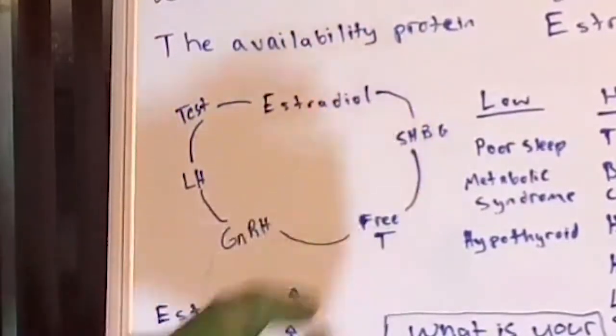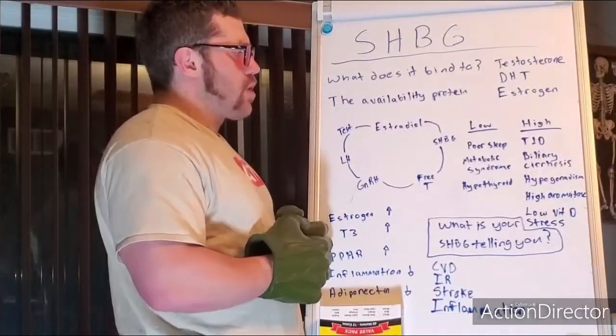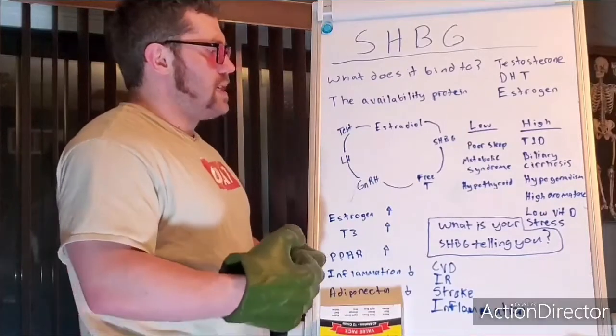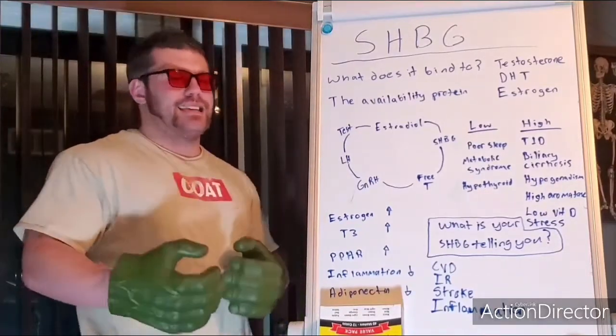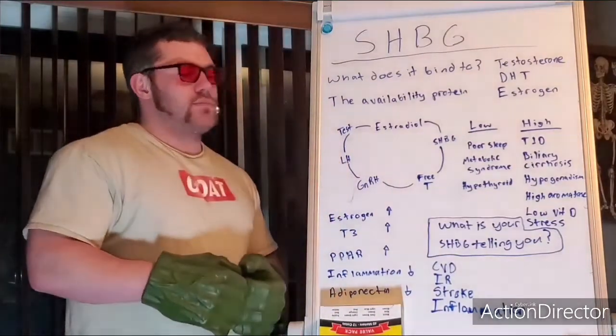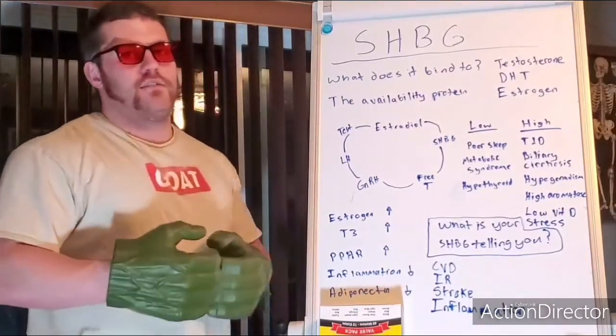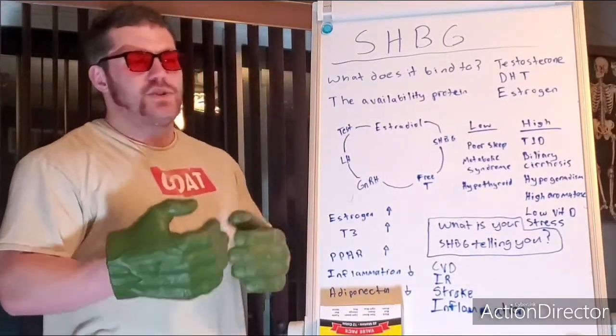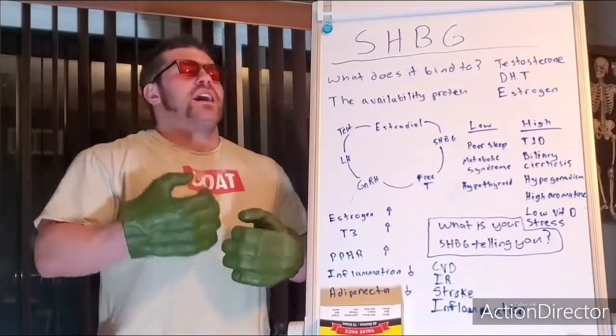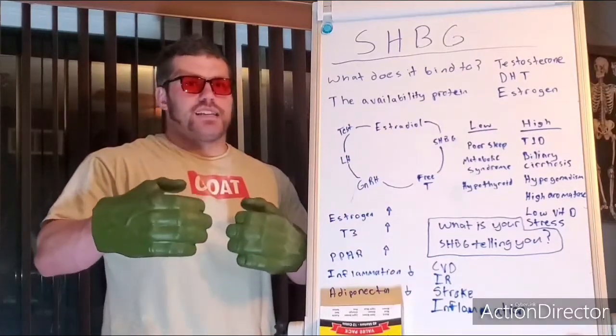So what processes would be associated with low SHBG or high SHBG? Low SHBG could be associated with poor sleep, metabolic syndrome. For those who aren't familiar, metabolic syndrome essentially refers to a cluster of issues within one: insulin resistance, dyslipidemia, high blood pressure. All of these basically cardiovascular type and diabetic type risk factors all combined.